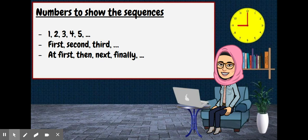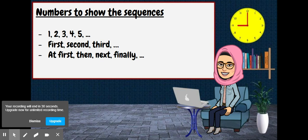So here is the last language features in the procedure text. Numbers to show the sequences. You may use one, two, three, four, five, and etc. Or you may also use first, second, third, or at first, then next, and finally.